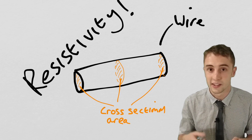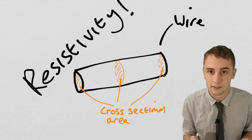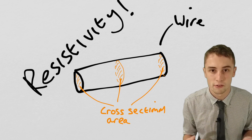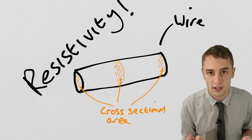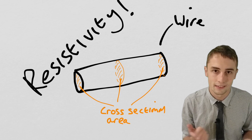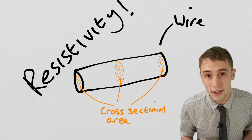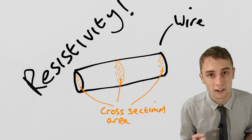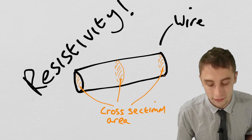Every material has a resistivity. Copper is going to have a resistivity, aluminium is going to have a resistivity. Even glass is going to have a resistivity, albeit a very very high one, because it's a very poor conductor.